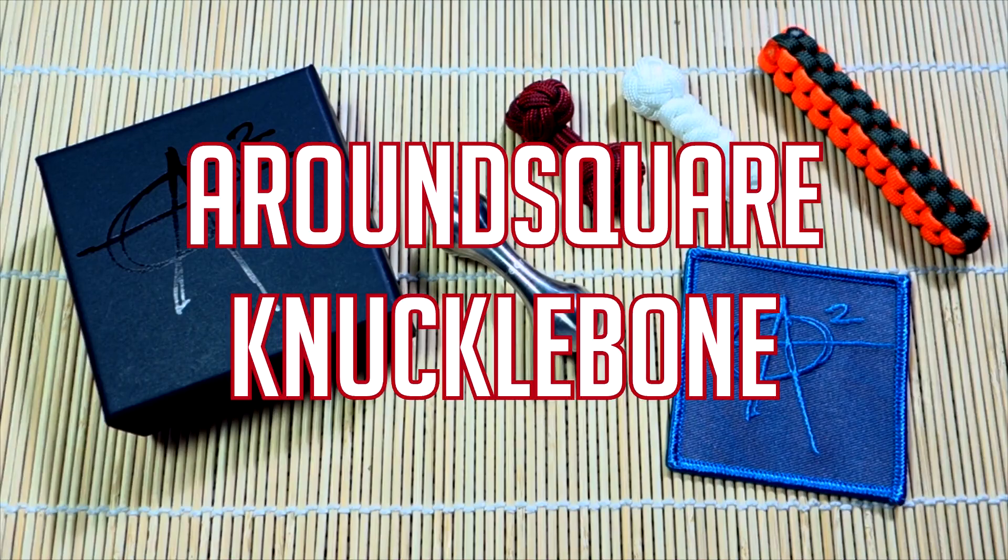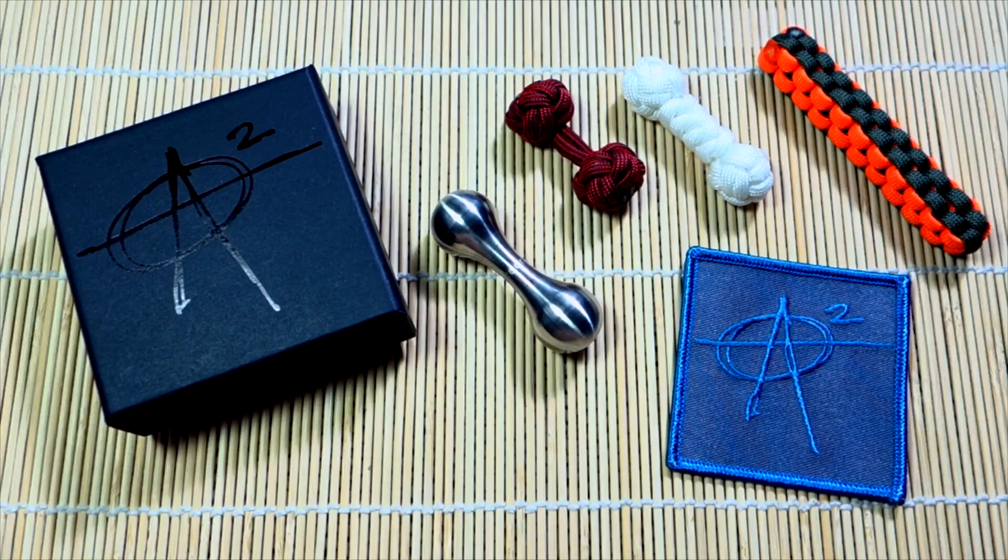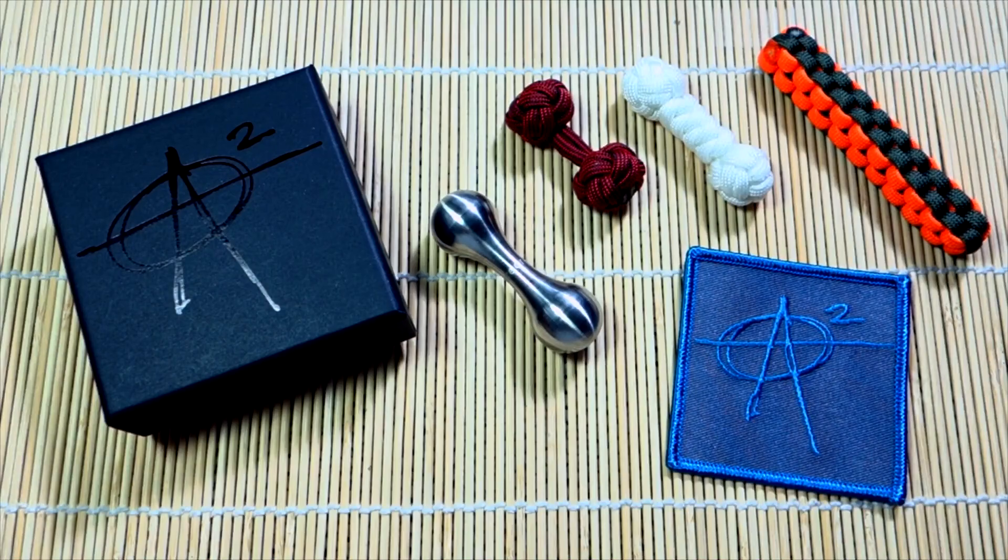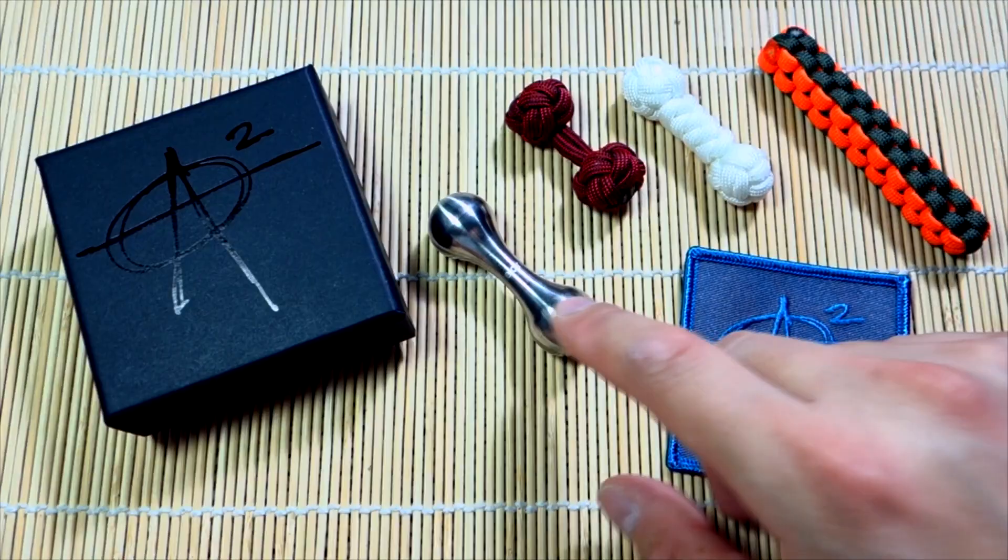Hey what's going on guys, Tim here again. Got another video for you today and this is more of a first impressions overview of another Around Square product. We're looking at the Knuckle Bone, as you can see in the title. So what is it? What is the Knuckle Bone? That's this little item here. I've done a few tutorials on knuckle rollers.